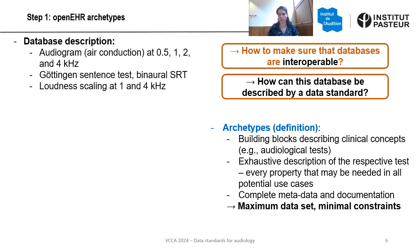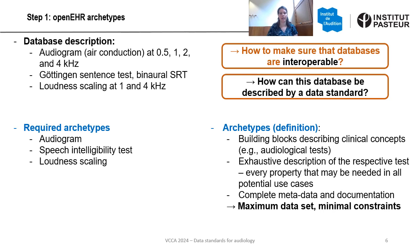This means we basically need to answer the question: how can this database be described by a data standard? In the terms of OpenEHR, this is the concept of archetypes, which are the building blocks describing clinical concepts — for example in our case, audiological tests. An archetype contains all information that we need to describe a test, including every property that we may need in any use case. So it provides complete metadata and documentation, and in terms of OpenEHR it is a maximum data set with minimal constraints, meaning we don't limit properties at this stage of data standardization. For the current example we need archetypes for audiogram, speech test, and loudness scaling.